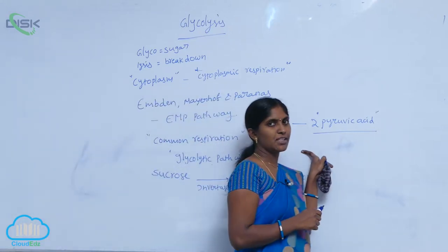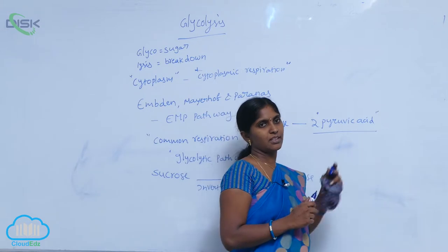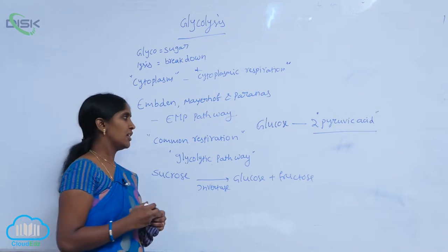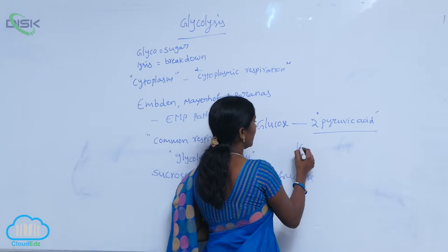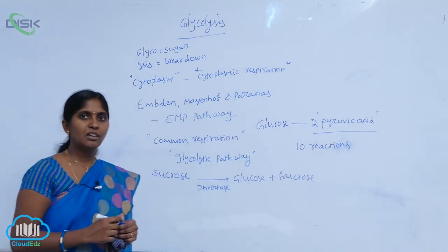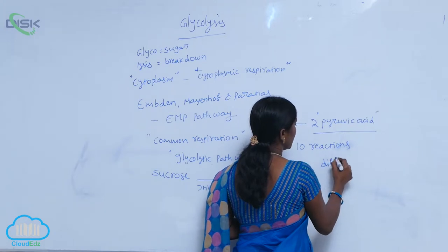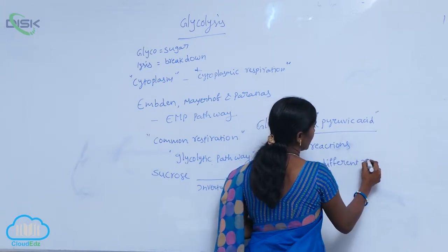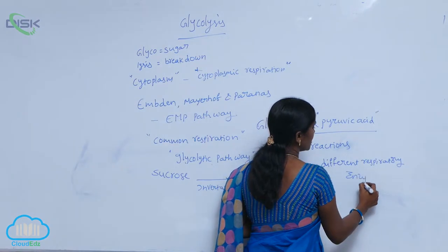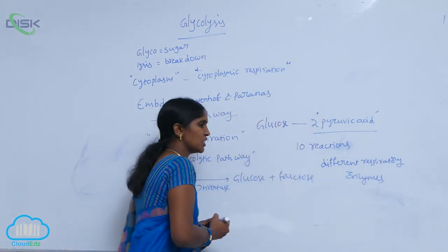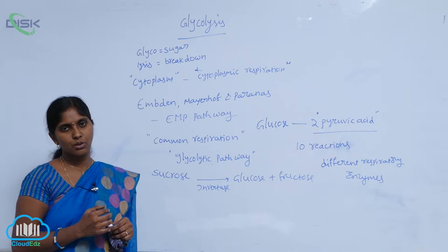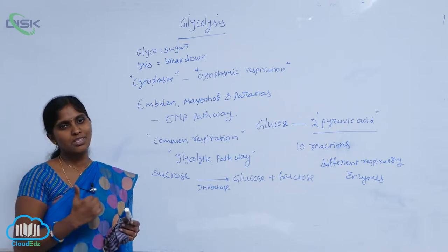Glucose is partially oxidized to produce two pyruvic acid molecules. This is the metabolic pathway included in respiration. It is composed of 10 reactions, and these reactions are involved by different respiratory enzymes. A number of respiratory enzymes are involved in glycolysis. In this reaction, glucose is turned into two pyruvic acid molecules — that is, partial oxidation of glucose is carried out here.